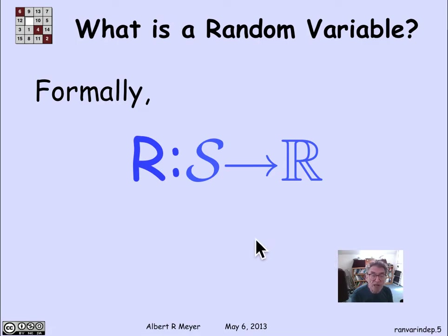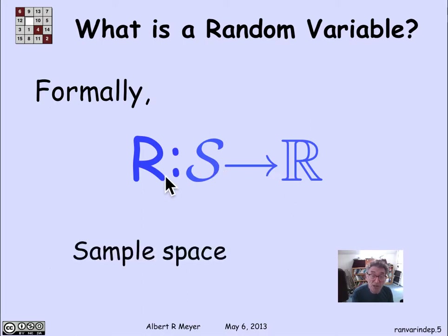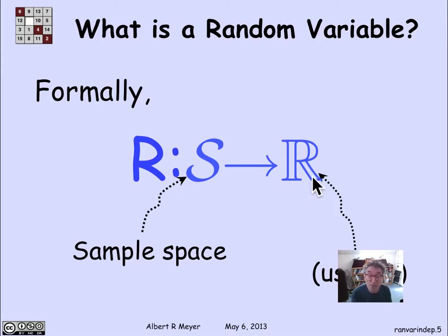Now we come to the formal definition. Formally, a random variable is simply a function that maps outcomes in the sample space to numbers. We think of the outcomes as the results of a random experiment — they have a probability — and when an outcome is translated into a real number, that's what the random variable does. So formally, a random variable is not a variable; it's a total function that maps the sample space to the real numbers. Usually this is a real-valued random variable, though it might be integer-valued, or occasionally complex-valued as in quantum mechanics — but for our purposes, random variable will mean real-valued.